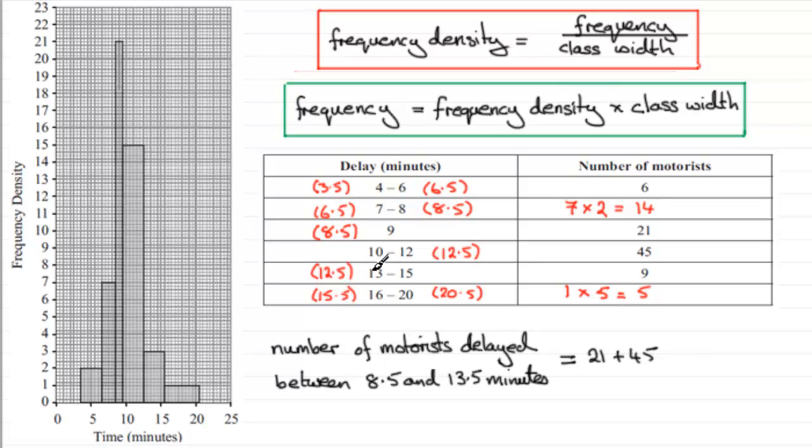But we've got a little extra bit to do here because we've got to go up to 13.5. Now we've started here at 12.5, so to go to 13.5 is going to be one unit of class width.